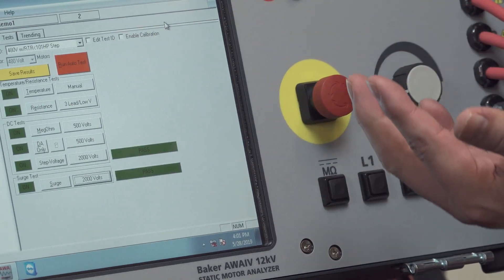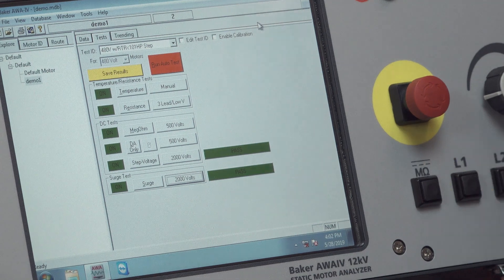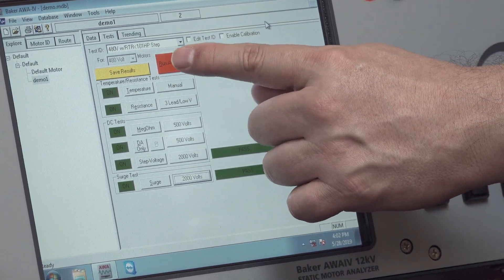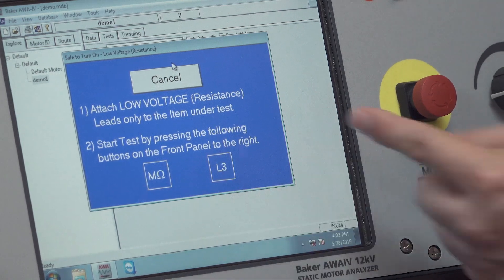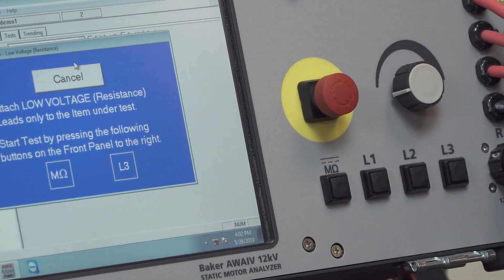Now normally we're going to run the advanced winding analyzer in the automatic mode, which is its strongest feature, by hitting the run auto test. To initiate the test, press the megaohm and lead three buttons simultaneously.